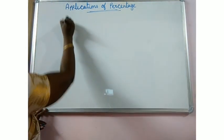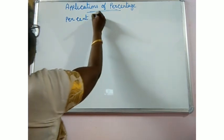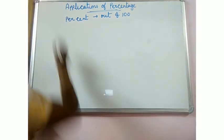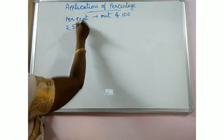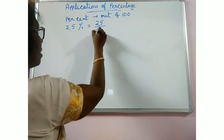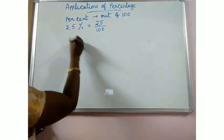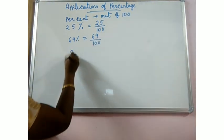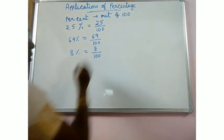Percent means out of 100. The sign for percent symbol is this. 25 percent means 25 by 100. Same way, 69 percent means 69 by 100. 8 percent means 8 by 100.